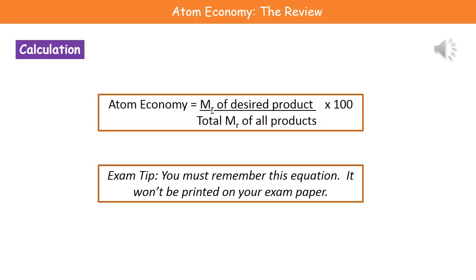This is the equation you need to use to calculate atom economy. One thing to note is they will not give you this equation on your exam paper, so you've got to memorize it. The equation is: atom economy = molecular mass of desired product divided by total molecular mass of all products, then multiply by 100 to get your answer as a percentage.